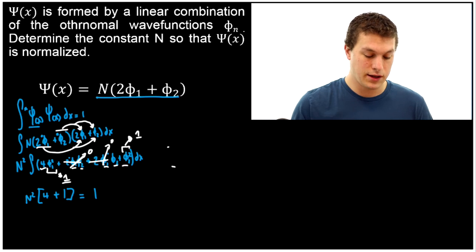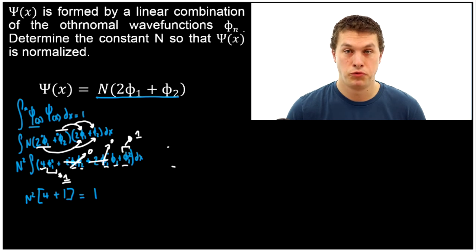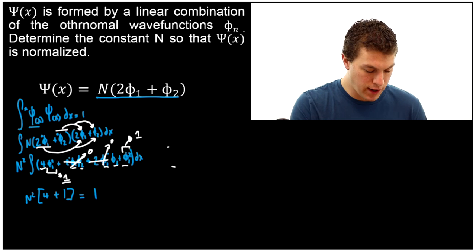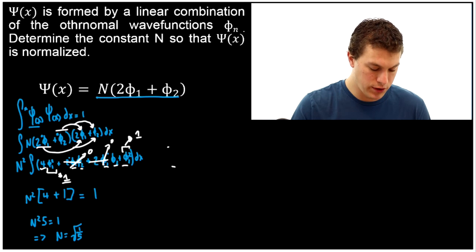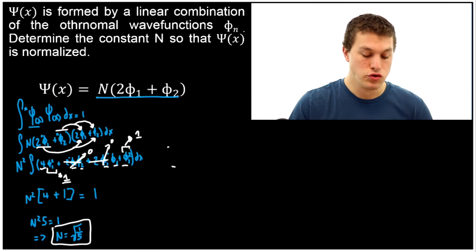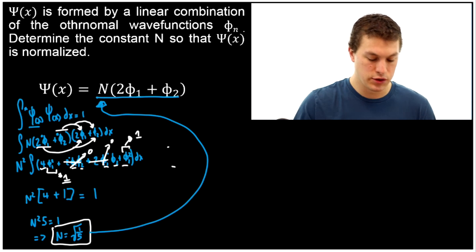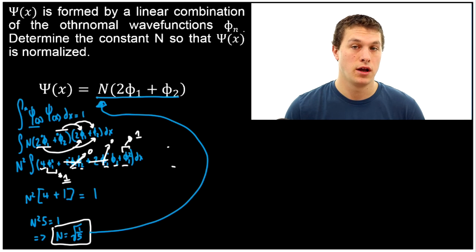So you can see we had this big integral with four different products of wave functions and we solved it in about twelve seconds. That's why ortho-normal wave functions are nice things to deal with. So now we get n squared times 5 equals 1, which tells us that n is equal to the square root of 1 over 5. We divide both sides by 5, take the square root, and that's our normalization constant. So now we have normalized this linear combination — we solved for this n, and even though phi 1 and phi 2 were normalized to begin with, when we mix them together they don't generate a new normalized wave function.